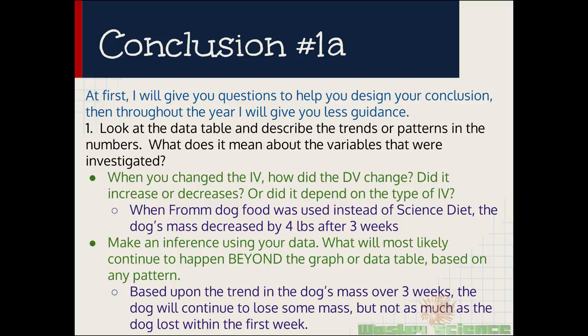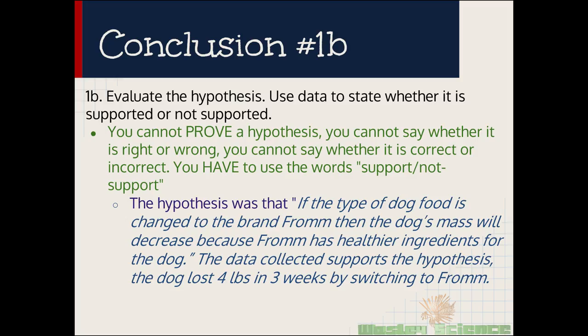And then in the second part you need to make an inference using your data. What will most likely continue to happen beyond the graph? So this is after 3 weeks. Based on this data, what do you think will happen after 3 weeks the dog continues to eat this Fromm dog food? And I'll tell you right now guys, this is the part that you guys have a lot of trouble with. Really simple, you just need to say what will happen to the dog's mass after 3 weeks. Well, it'll probably continue, the dog will continue to lose some mass but not as much because you could see in that third week the dog didn't lose nearly as much mass as it did in the first and second. Moving on to the second part of the first paragraph of our conclusion, 1b.